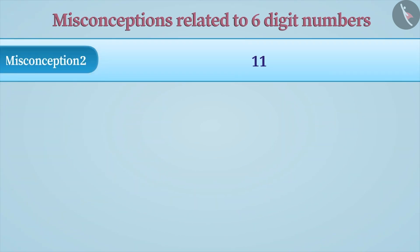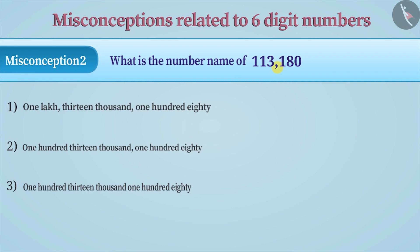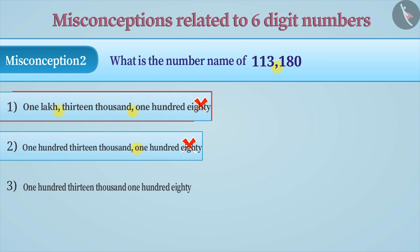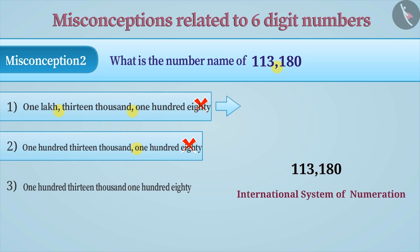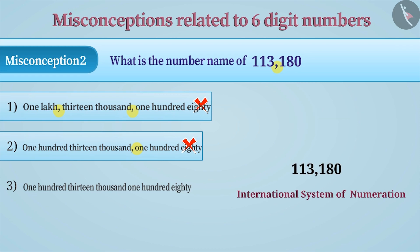Misconception 2: What is the number name of 113,180? Commas are used only in numbers, not in number names. Hence, option 1 and 2 are wrong. Option 1 is wrong because the number has been written in the International System of Numeration, but the name has been written as per the Indian System of Numeration. The correct answer is option 3, where the number is as per the International System of Numeration and the number name is without commas.